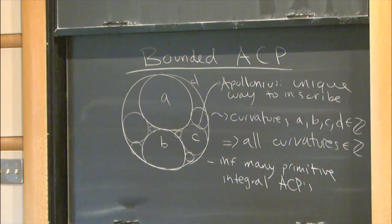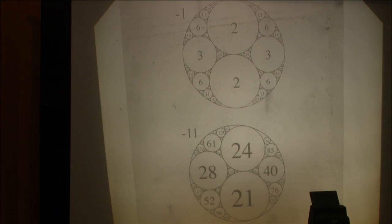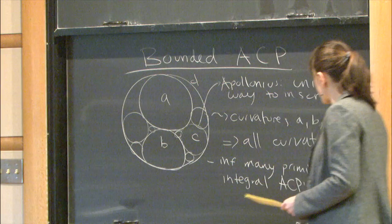There are all sorts of number-theoretic questions you can ask about these integral packings. For example, are there infinitely many circles of prime curvature in these packings? And if so, can you come up with some sort of prime number theorem — how many circles of prime curvature are there less than x? I'm going to talk about questions related to that. But first: how do you determine the curvatures written inside those circles in the pictures?